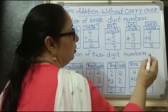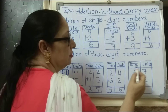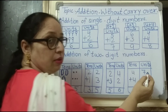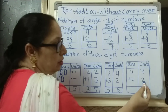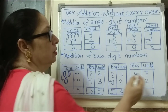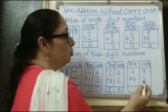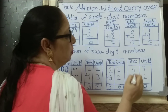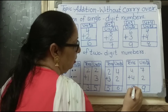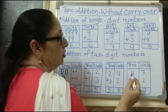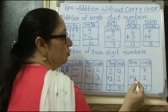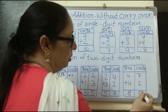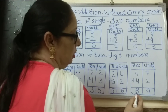The next question. Tens and units columns. The first number has four tens and seven units. The second number has four tens and two units. First, count the units: seven plus two equals nine units. Then the tens: four plus four equals eight tens. Altogether the answer is eighty-nine.